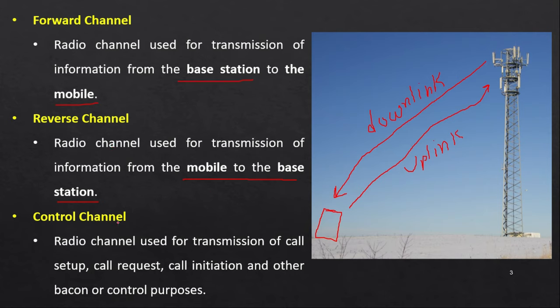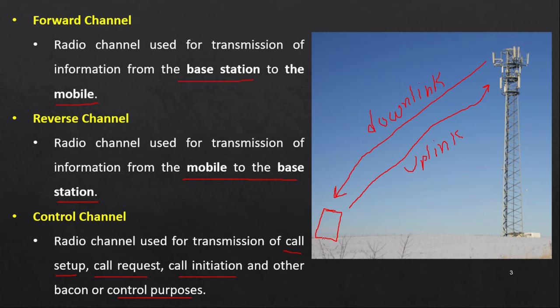The control channel is a radio channel used for transmission of call setup, call request, call initialization, and other beacon or control purposes. When you are calling someone or receiving a call on a mobile phone, all of this control process uses the control channel in the cellular system.